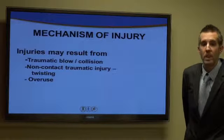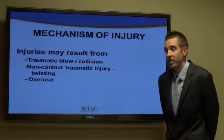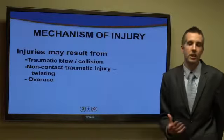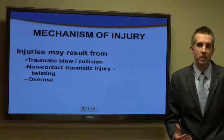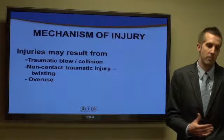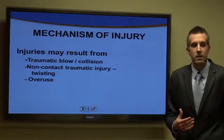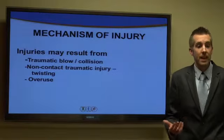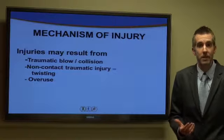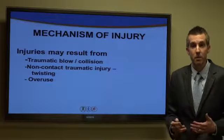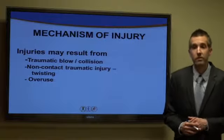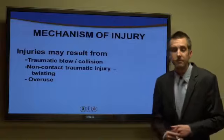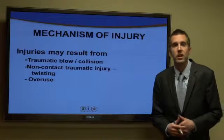The ways injuries can happen for basketball players: you can have a traumatic incident where you collide with another player, someone falls on the other person's knee, and it causes an ACL tear. You also have non-contact traumatic injuries, which is usually a pivoting motion where the athlete plants their foot and twists on it. The last is overuse.